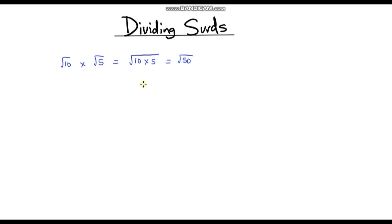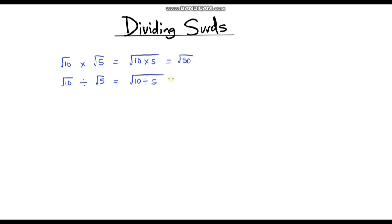When we're dividing surds the rules are very similar. Let's take the same numbers — the square root of 10 divided by the square root of 5. This is exactly the same as taking the square root of the quotient of these numbers: 10 divided by 5. We know that 10 divided by 5 is 2, so the answer is the square root of 2.